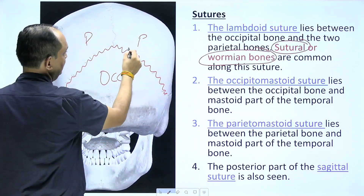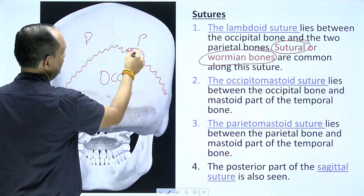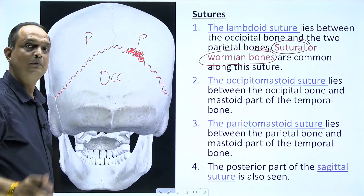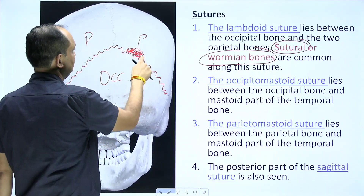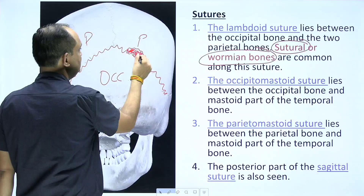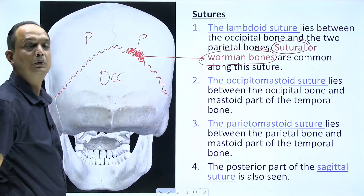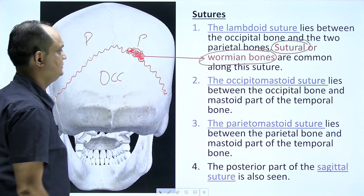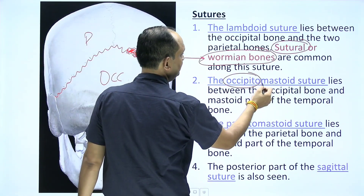An important topic here is Wormian bones, also called sutural bones. These are present when accessory bones develop in the lambdoid suture. Some skulls will show bones present in this lambdoid suture, and if present, these are known as sutural bones or Wormian bones.